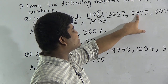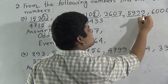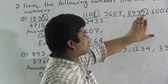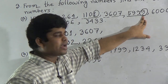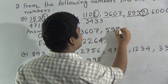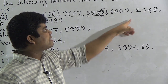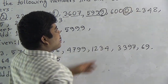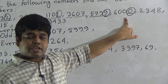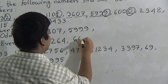Our next number is five thousand nine hundred ninety-nine. The ones place digit is nine, and nine is also an odd number. So five thousand nine hundred ninety-nine is odd, and we write it in the odd number section. Our next number is six thousand. Its ones place digit is zero, and zero is an even number. So six thousand is even, and we write six thousand in the even number section.